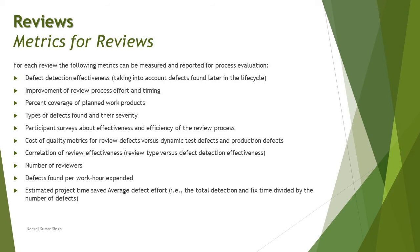For each review, the following metrics can be measured and reported for process evaluation. The previous metrics were for product evaluation; now we look at process evaluation. Metrics here include defect detection effectiveness, improvement of review process, effort, and timing — that is, how efficient the process was in identifying defects and what effort produced good detections.